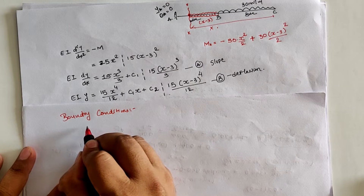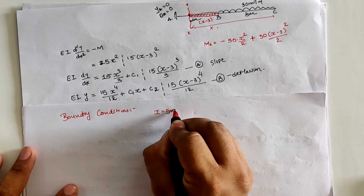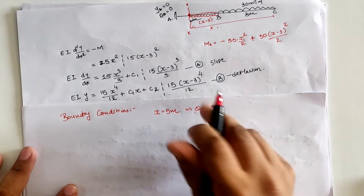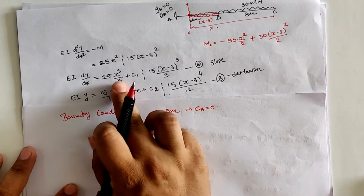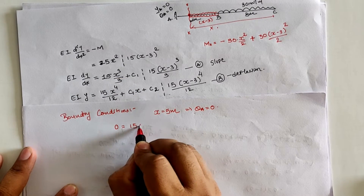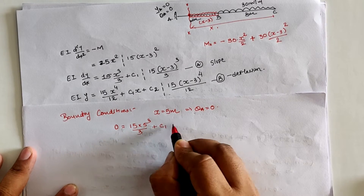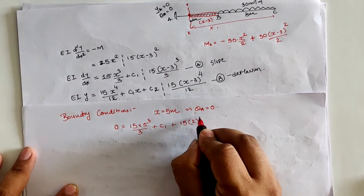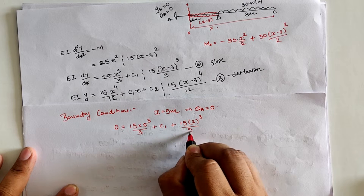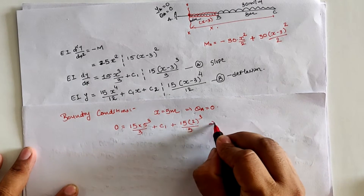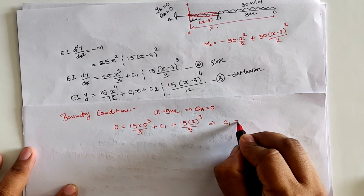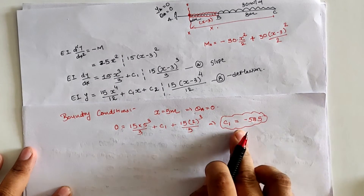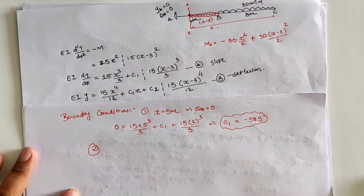Using the first boundary condition: when x = 5 m (at location A), slope dy/dx = 0. From equation A: 0 = 15(5)³/3 + C₁ − 15(5 − 3)³/3 = 15(125)/3 + C₁ − 15(8)/3. Solving this gives C₁ = −585.